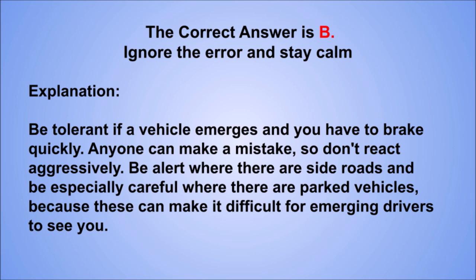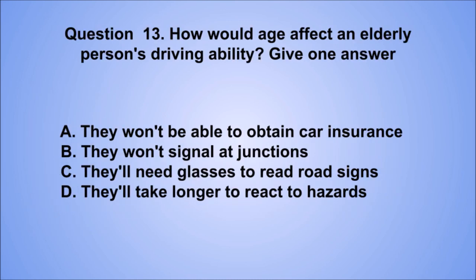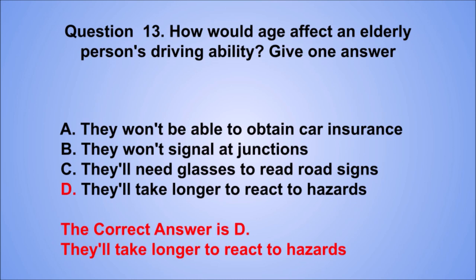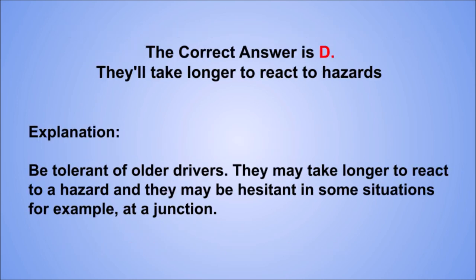Question 13. How would age affect an elderly person's driving ability? Give one answer. A. They won't be able to obtain car insurance. B. They won't signal at junctions. C. They'll need glasses to read road signs. D. They'll take longer to react to hazards. The correct answer is D, they'll take longer to react to hazards. Be tolerant of older drivers. They may take longer to react to a hazard and they may be hesitant in some situations, for example, at a junction.